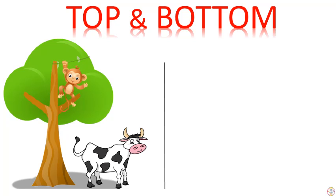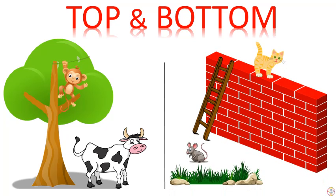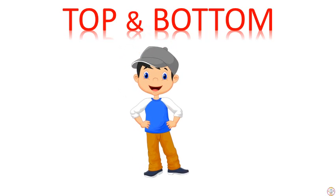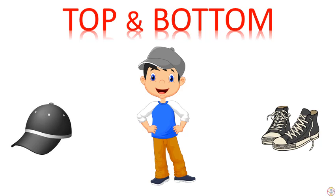In the second picture, can you guess which one is at the top and which one is at the bottom? Yes, the cat is at the top of the wall and the mouse is at the bottom. Now let's have a guessing game. Here you have to find which object the boy is having at the top and which one he is having at the bottom. Yes, the boy is wearing the cap at the top and the shoes are at the bottom.